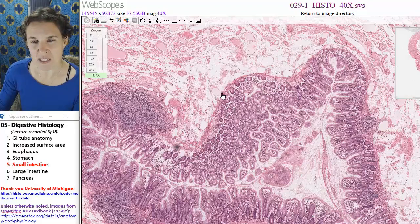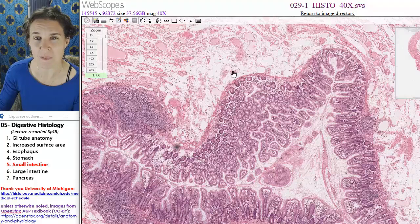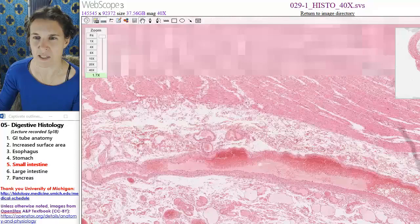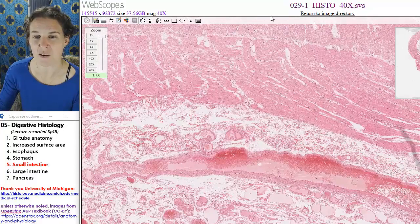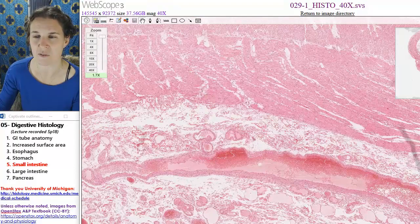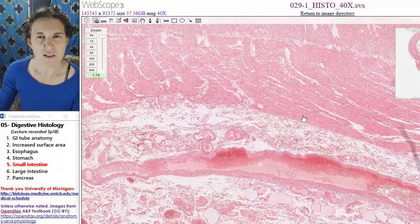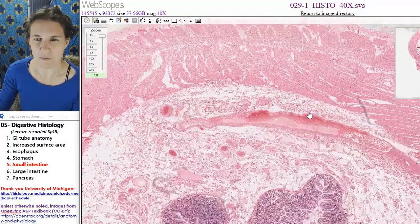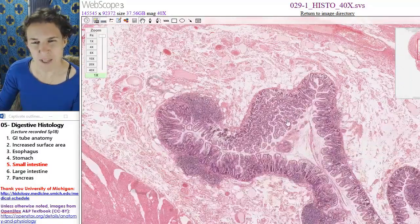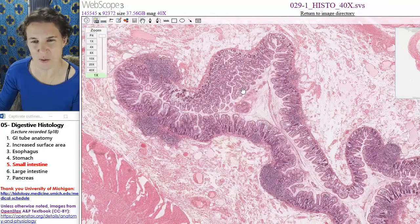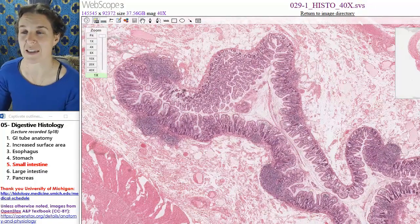Here we have muscularis mucosae, which means that all of this is lamina propria, but this is submucosa basal to that. And then we've got our big, thick layers of smooth muscle there in muscularis externa. But this is jejunum, and that is something that might help you decide that.